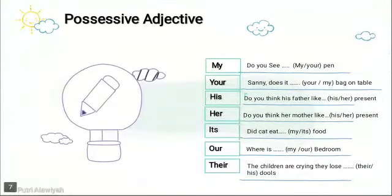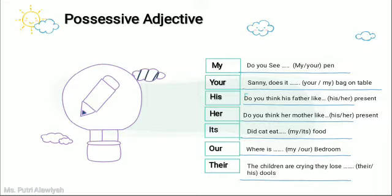Next is about possessive adjectives — kata kepemilikan. For example: my (punya ku), your (punya mu), his (punya dia laki-laki), her (punya dia perempuan), its (untuk benda), our (punya kami), their (punya mereka). You need to analyze sentences by yourself. For example, question number one: 'Do you see pen?' — because the question is directed at someone, it becomes 'Do you see my pen?' And number two: 'Does it back on the table?' — because it points to you, the answer is 'your'.